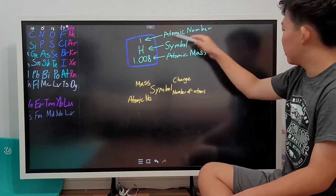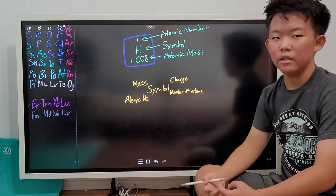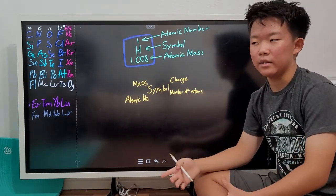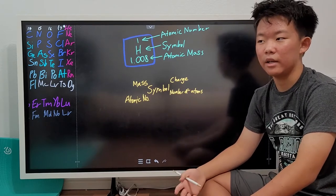Lastly, the atomic mass is basically the average of all the masses of the isotopes of the elements. We'll talk more about that later.